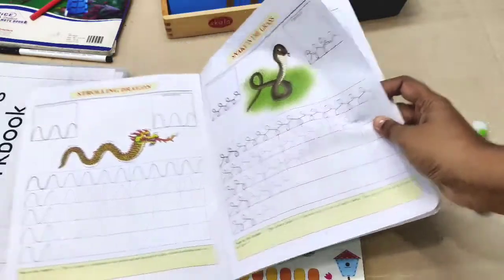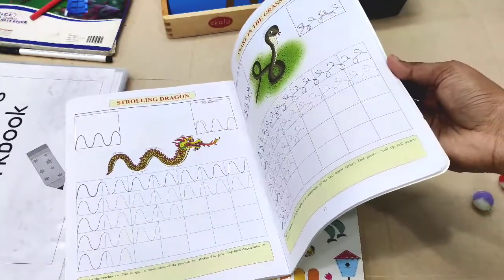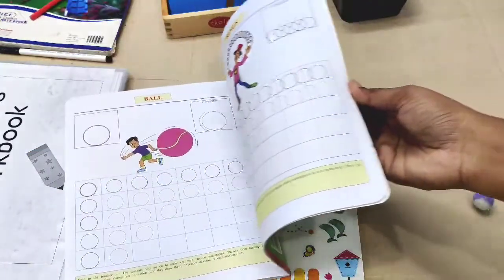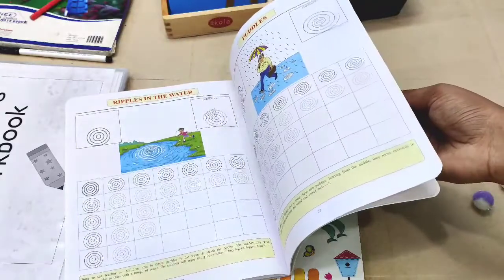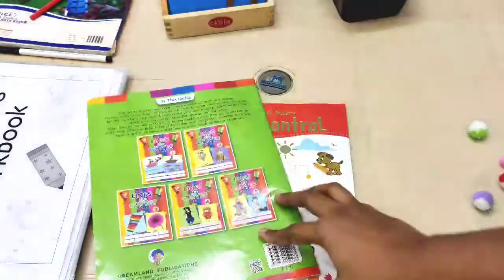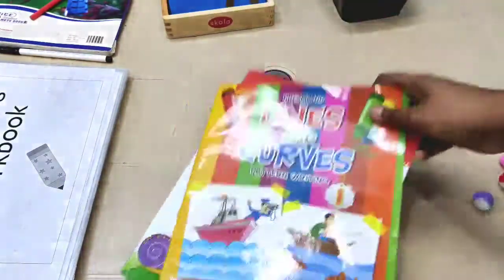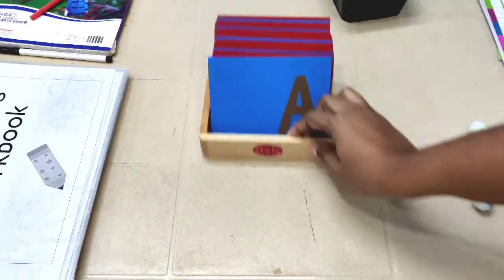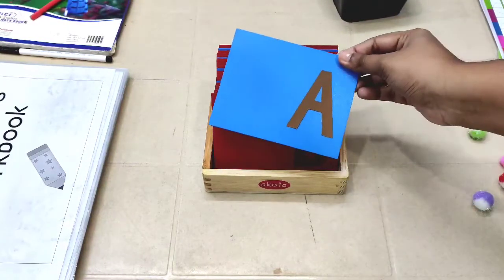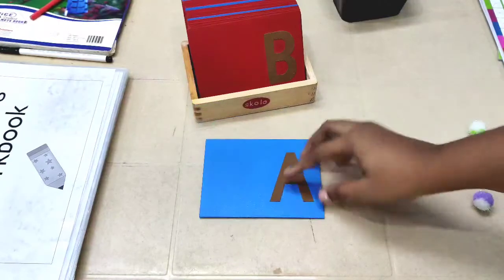You want them to practice a lot. You can also buy these sandpaper tactiles. These are great for hand-eye coordination and recognition of letters.